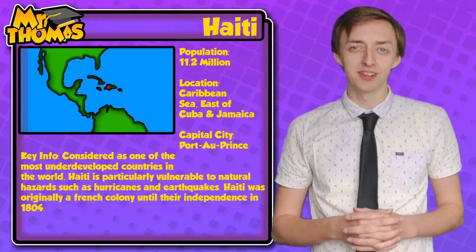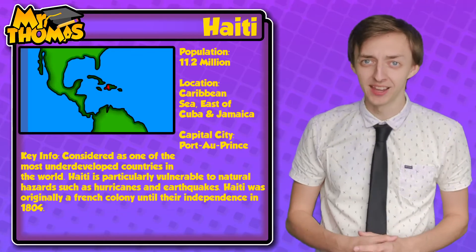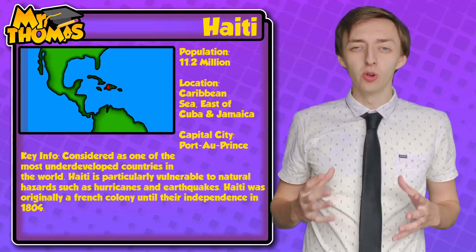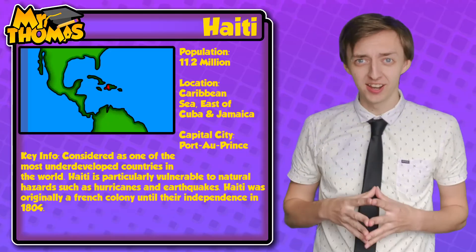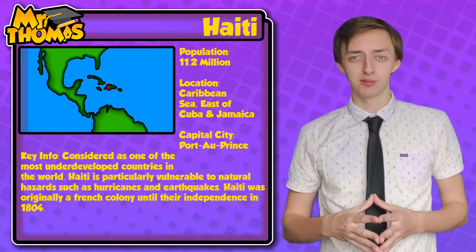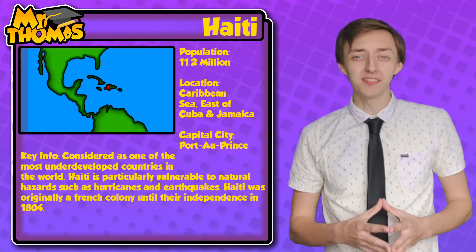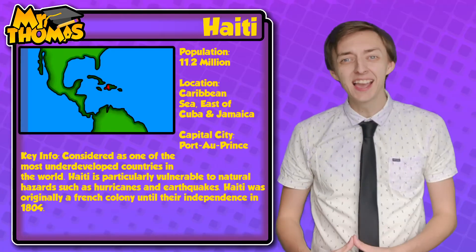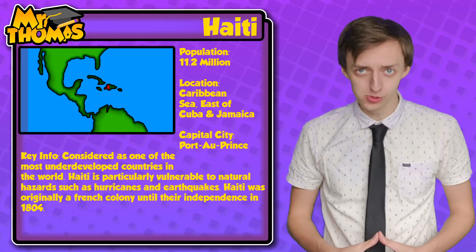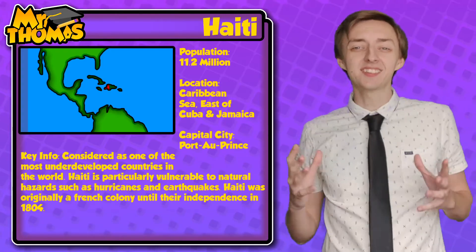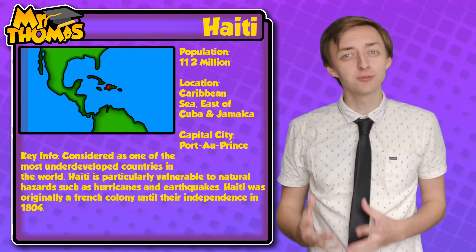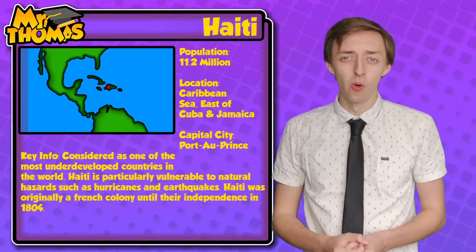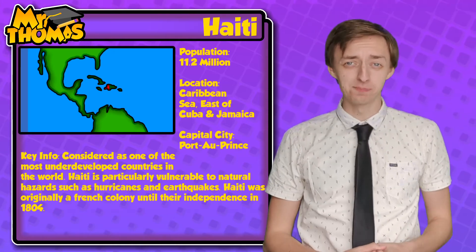Haiti is a country found in the Caribbean and it's neighboured to the east by the Dominican Republic. On all other sides, Haiti is surrounded by water. To the south and to the west is the Caribbean Sea and to the north is the Atlantic Ocean. Haiti's capital city is Port-au-Prince and is home to approximately one million people.